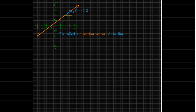This vector which is parallel to the line is called a direction vector of the line. I could have chosen <-3, -2> or <6, 4>. All of those vectors are parallel to the line and could be used as a direction vector.